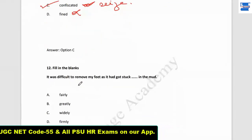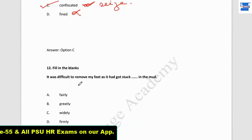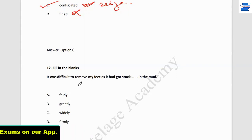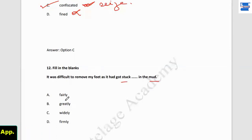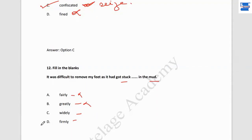Question number 12: 'It was difficult to remove my feet as it had got stuck ___ in the mud.' Options: fairly, greatly, widely, firmly. 'Fairly' means in a good way, 'greatly' means in a grand way, 'widely' has no meaning here. 'Firmly' means strongly — the feet were firmly stuck, which is why it was difficult to remove. Point D, 'firmly,' is the answer.